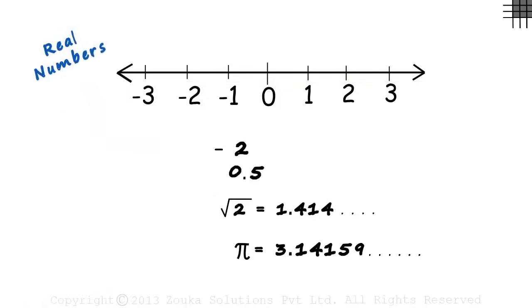So that's our definition. Any number that can be plotted on a number line is called a real number.